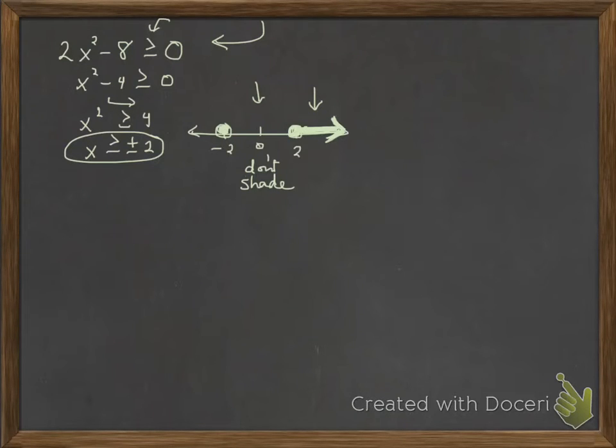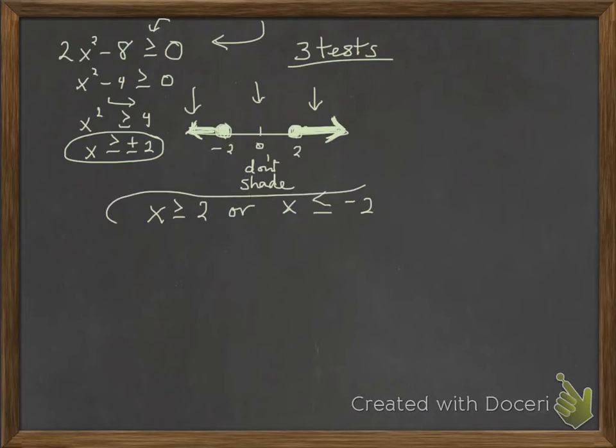By taking random values in the three intervals. The third interval is over here to the left of the first point. And let's say I'll take negative 3. Negative 3 squared is 9. 18 minus 8 is greater than. So I would want to shade this interval. So my final answer is, because they're separated from one another, I can say x is greater than or equal to 2 or x is less than or equal to negative 2. And that's my answer.